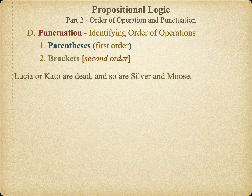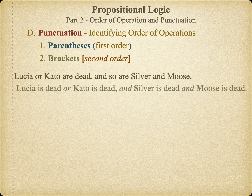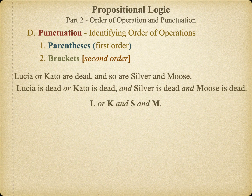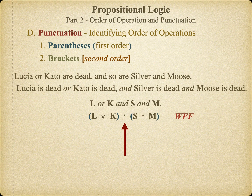In this next example, we have three logical operators — a disjunction and two conjunctions. To see how to symbolize this, let's spell out the statement more clearly. Notice that in the original statement, we have a comma between the disjunction but before the conjunction. This tells us that the conjunction is joining 'L or K' and 'S and M.' Hence, we need parentheses around 'L or K' and around 'S and M.' Note how this clearly shows that the conjunction is joining the two together. This is a well-formed formula, and this is also what we call the main operator, because it will be the last logical operation to be performed on this statement.